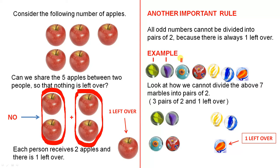One, two, three, four, five, six, seven - we have seven marbles. Look at how we cannot divide the above seven marbles into pairs of two.